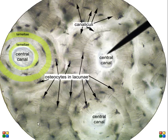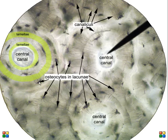This is another image I have on my website which is labeled for all of those specific structures. You can see the lamellae — the rings — the central canals, the canaliculi — these little dark lines — and then the osteocytes inside of the lacuna or lacunae.